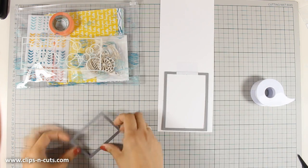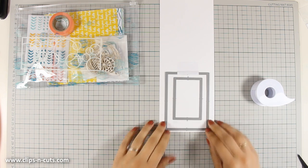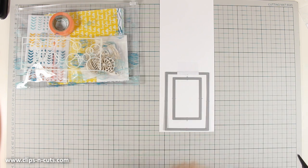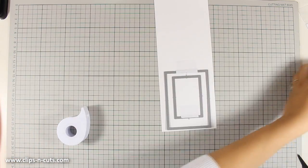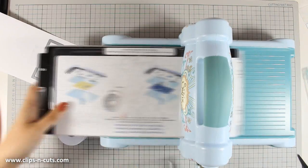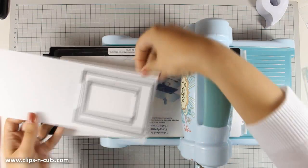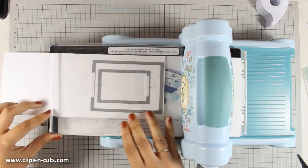So let's create a shaker card with this kit today. I am using these dies to create a frame and I am going to place them exactly where I want them to be. I am taping them down with some post-it tape and now I am going to pass it through my Sizzix machine.